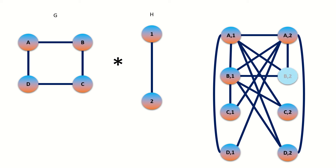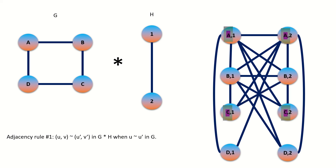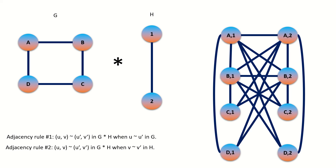On to vertex B2. By the first adjacency condition, B2 will be adjacent to A1, A2, C1, and C2, as their left entries are adjacent to vertex B in graph G. By the second adjacency rule, B2 will connect to vertices A1, B1, C1, and D1, as their right entries are adjacent to vertex 2 in graph H.